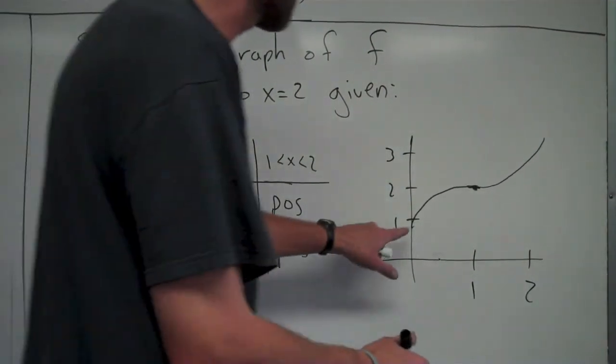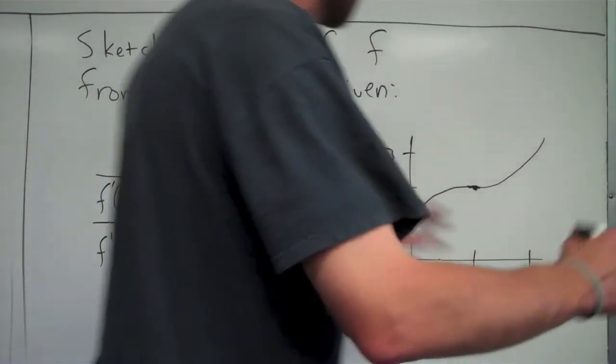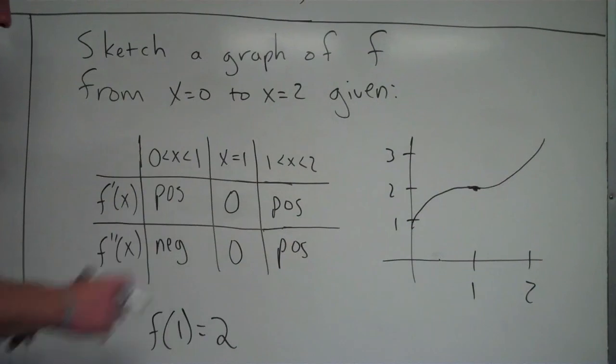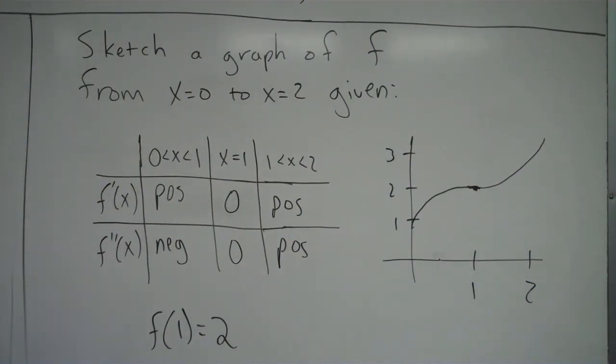And again, you can see how I went all the way from 0 to 2. I mean, it didn't stop before I got to either one of those. You have to make sure you go all the way. And I meet all the characteristics of this graph. Or this graph meets all the characteristics of the information I was given.